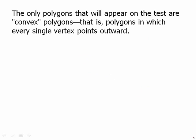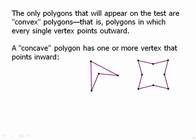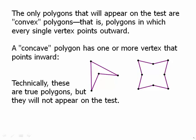The only polygons that will appear on the test are convex polygons. That is polygons in which every single vertex points outward. A concave polygon has one or more vertex that points inward. Well turns out those technically are true polygons but the test is not going to ask about them so we don't need to worry about them.